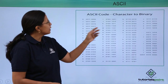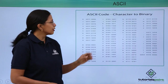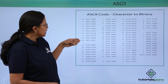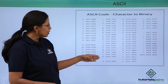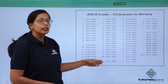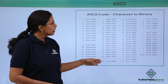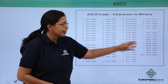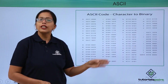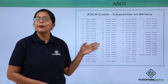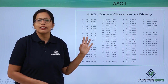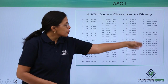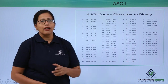Let's look at these characters. You can see the numbers 0 through 9, then A to Z uppercase, then lowercase a to z, and then some special characters are shown here. This is not a complete ASCII code — there are some more special characters.